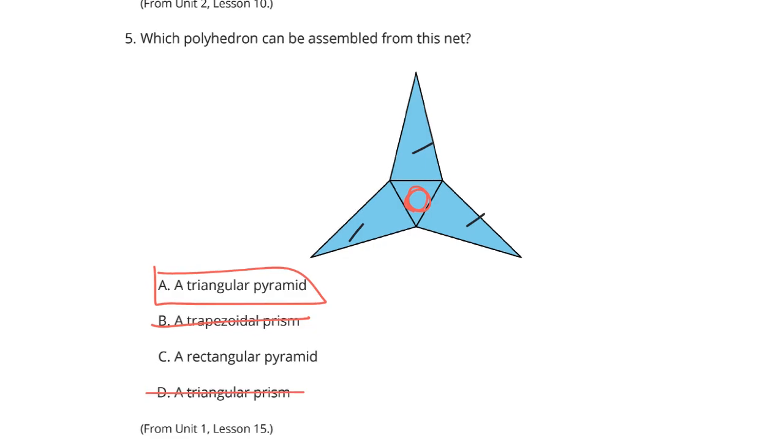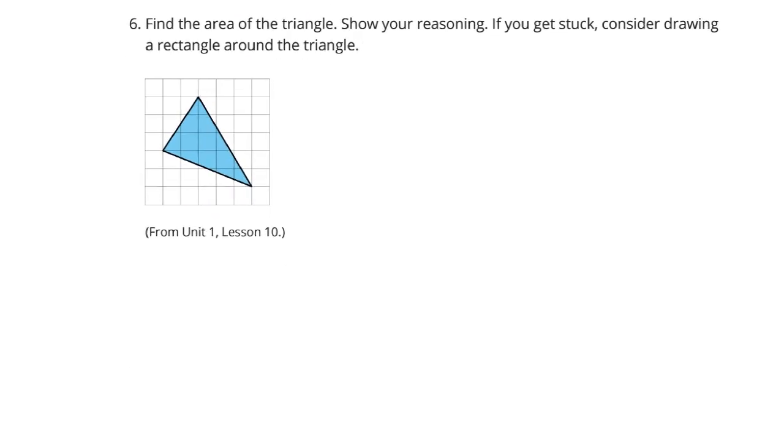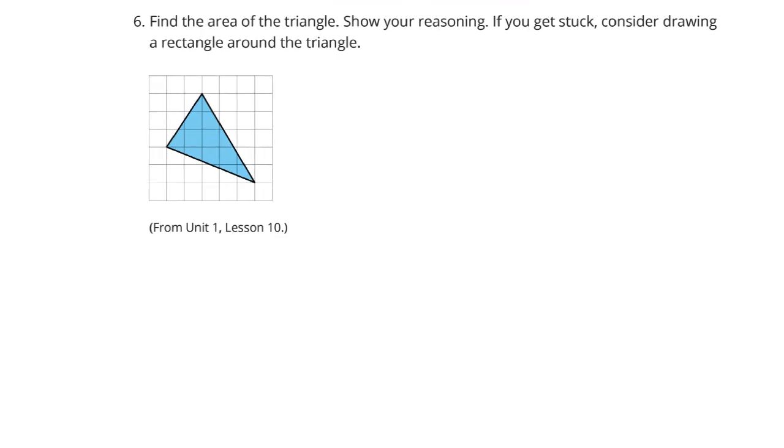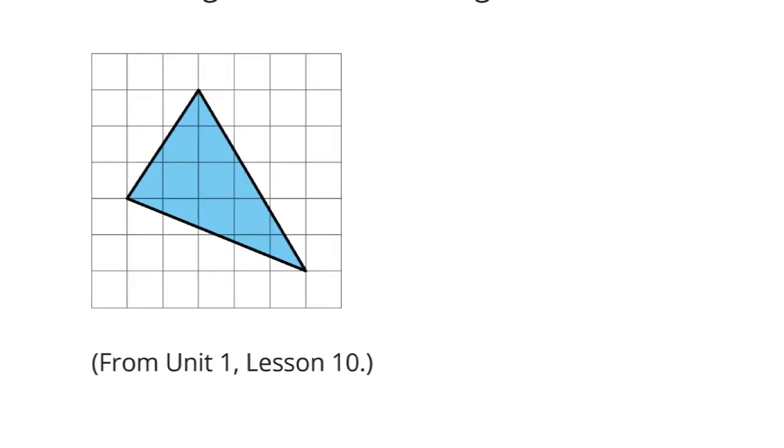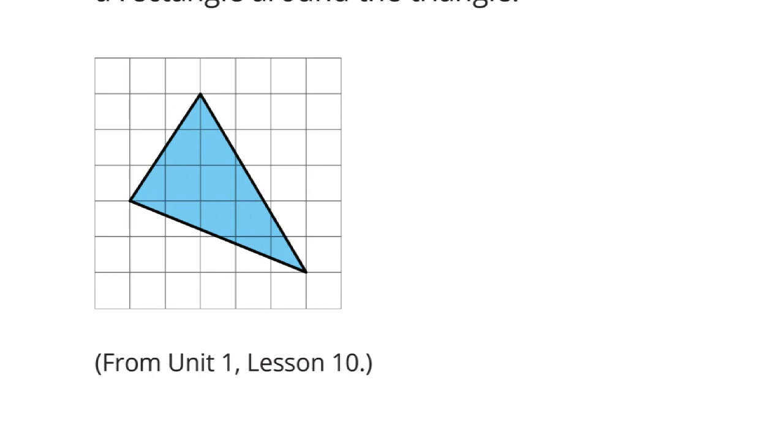On to our last question, question 6. Find the area of the triangle. Show your reasoning. If you get stuck, consider drawing a rectangle around the triangle. Well, I don't have really any bases and heights that meet at a right angle here, do we? And so, what we need to do is to go ahead and draw this rectangle in as best we can. And then we'll have to find the area of triangle A, B, and C here and subtract out from the entire rectangle.